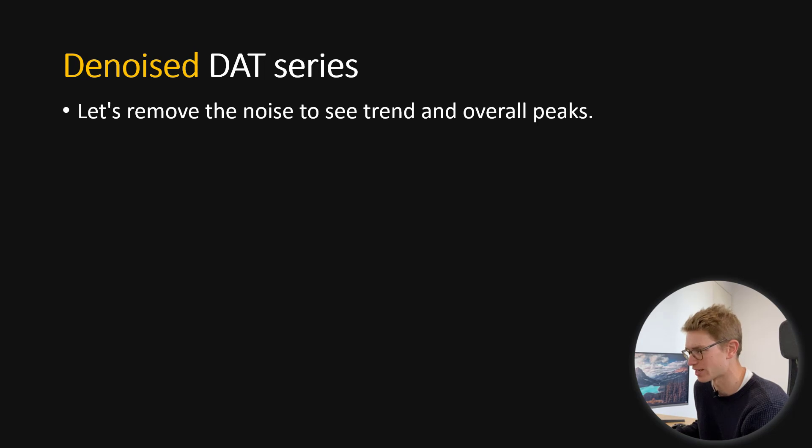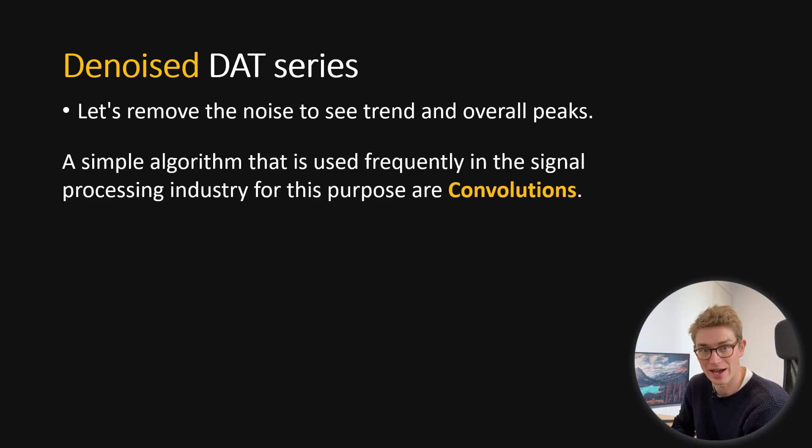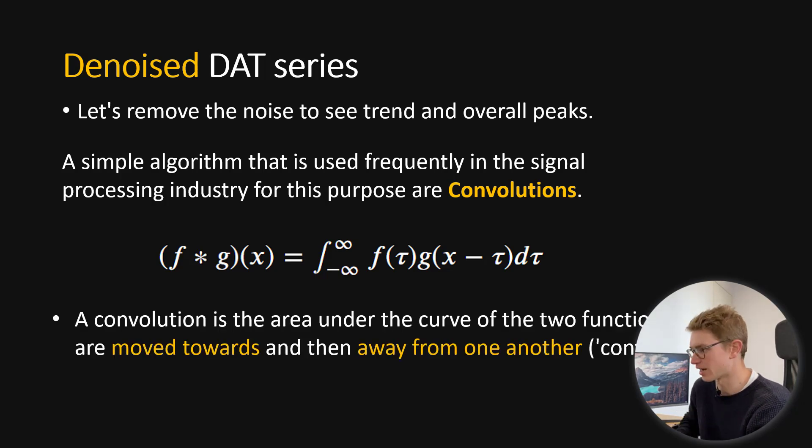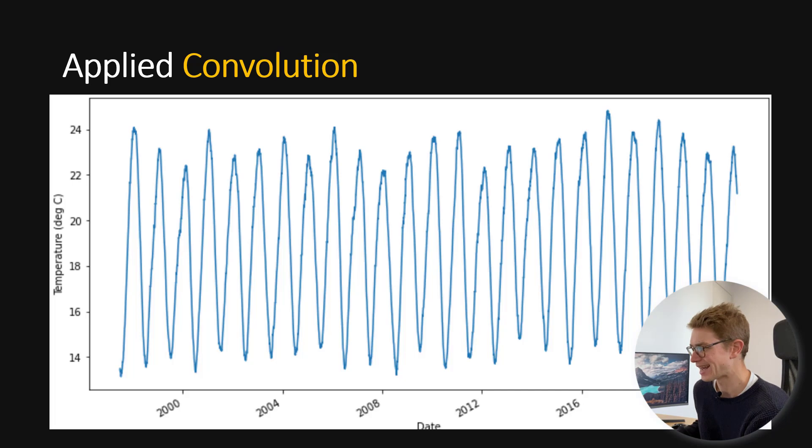One of the ways we can actually do this is by using a simple algorithm that signal processing industry have used for exactly this purpose. And that is convolutions. Convolutions is just a mathematical operation whereby we are convoluting one function with another. A convolution is just the area under the curve of these two functions that are moved towards each other and then away from one another, AKA convolved. So, an applied convolution ends up looking like this. Here, I've just used a square function and then convolved it with our time series data. And essentially, what we've got is a nice, smooth, denoised temperature series.